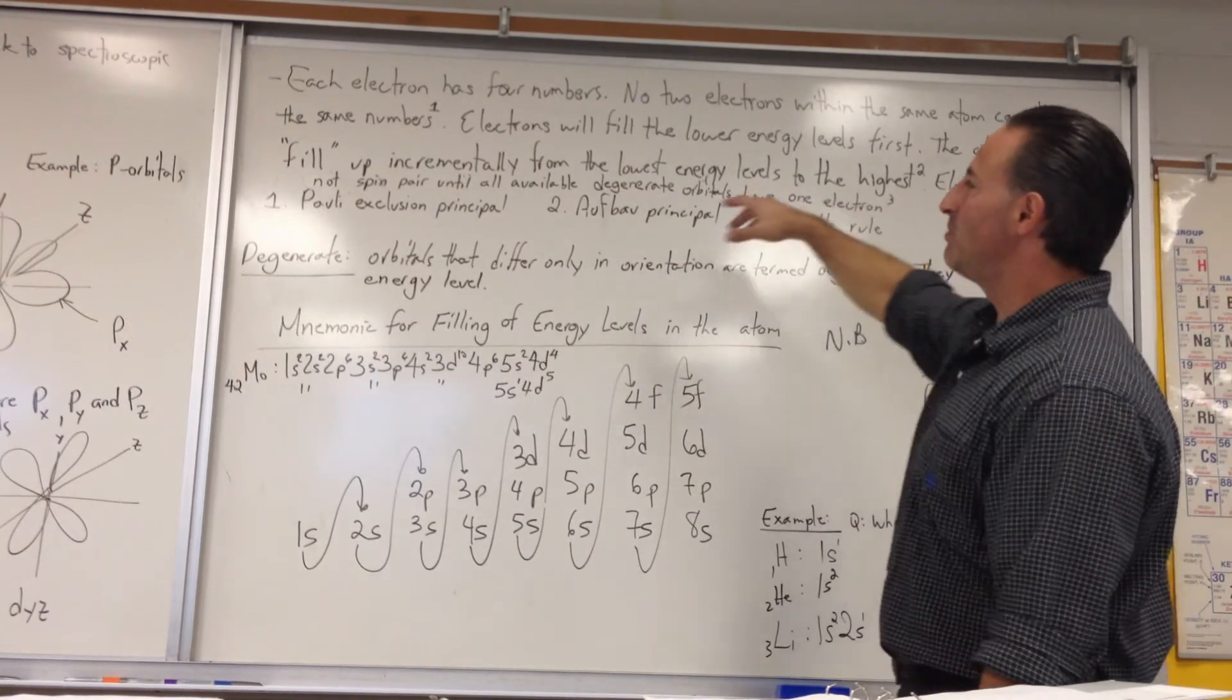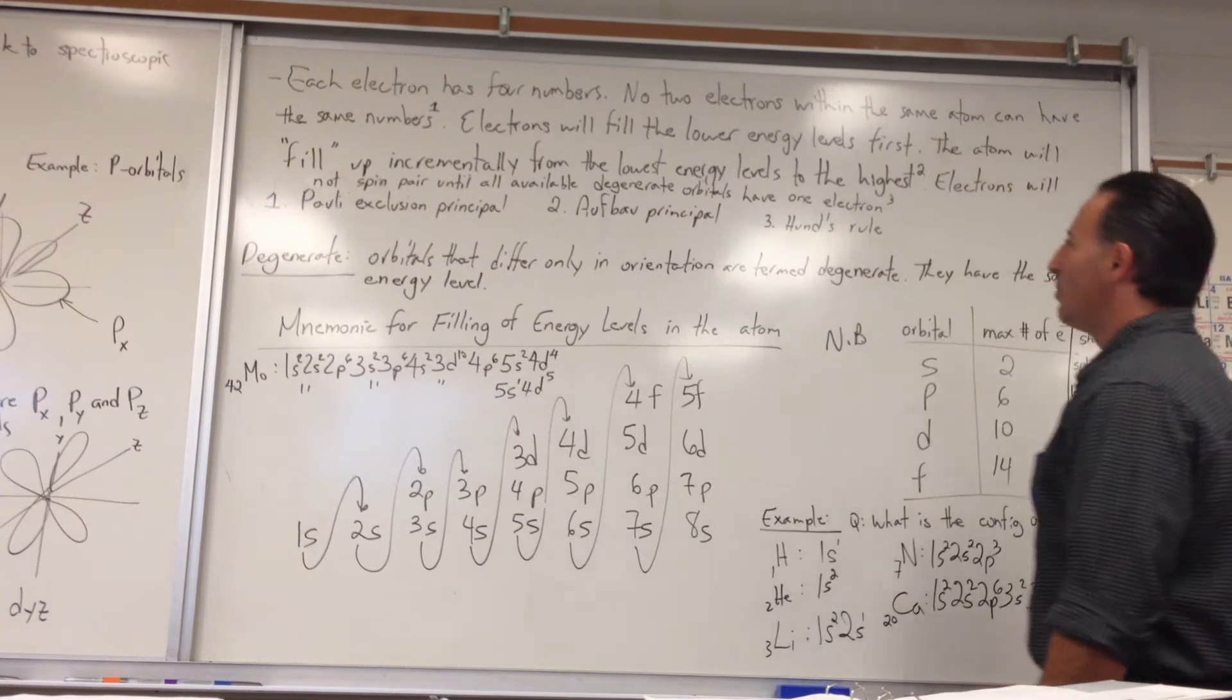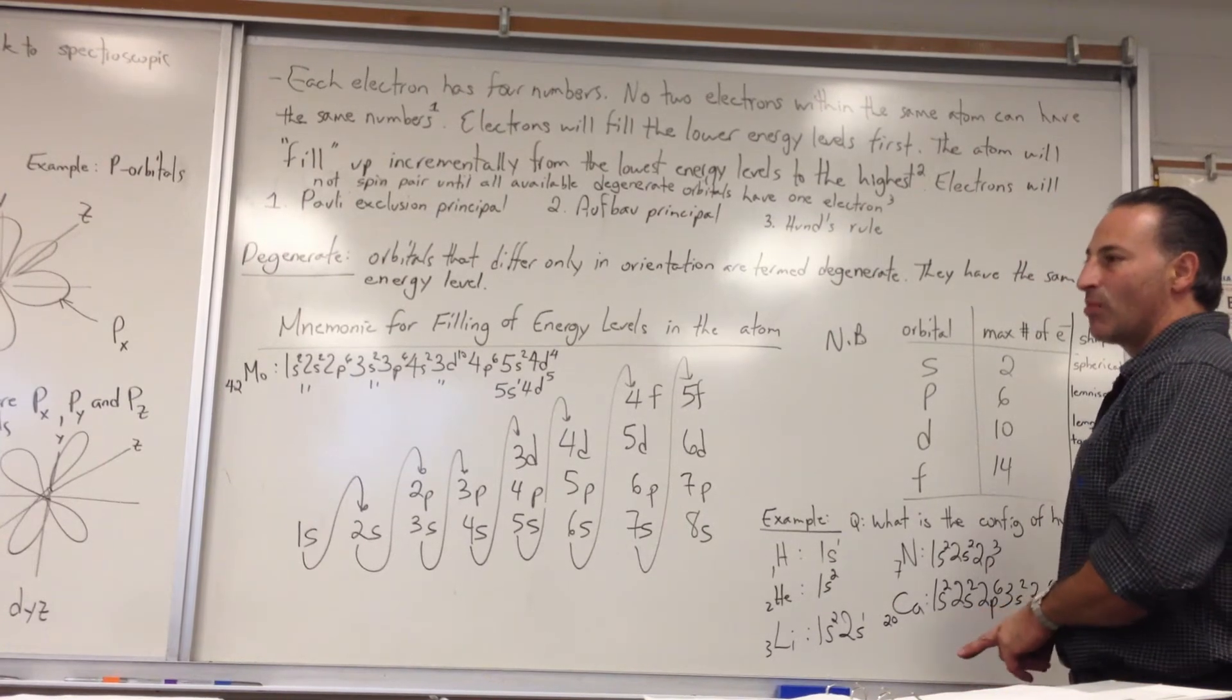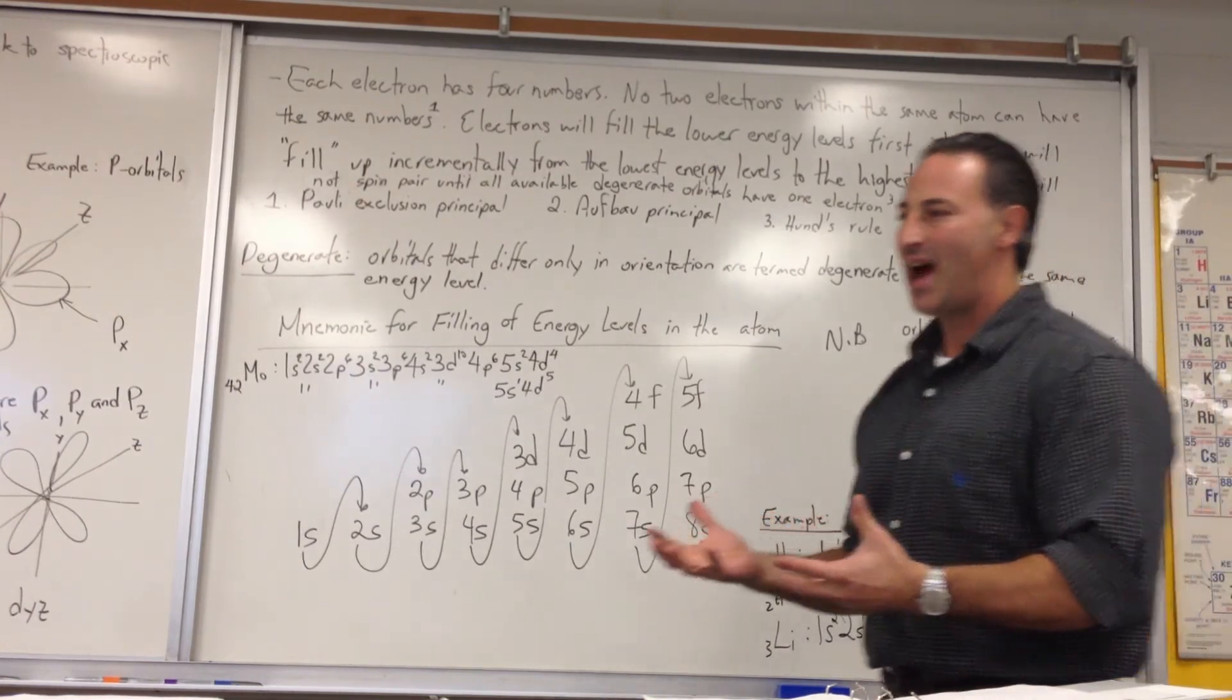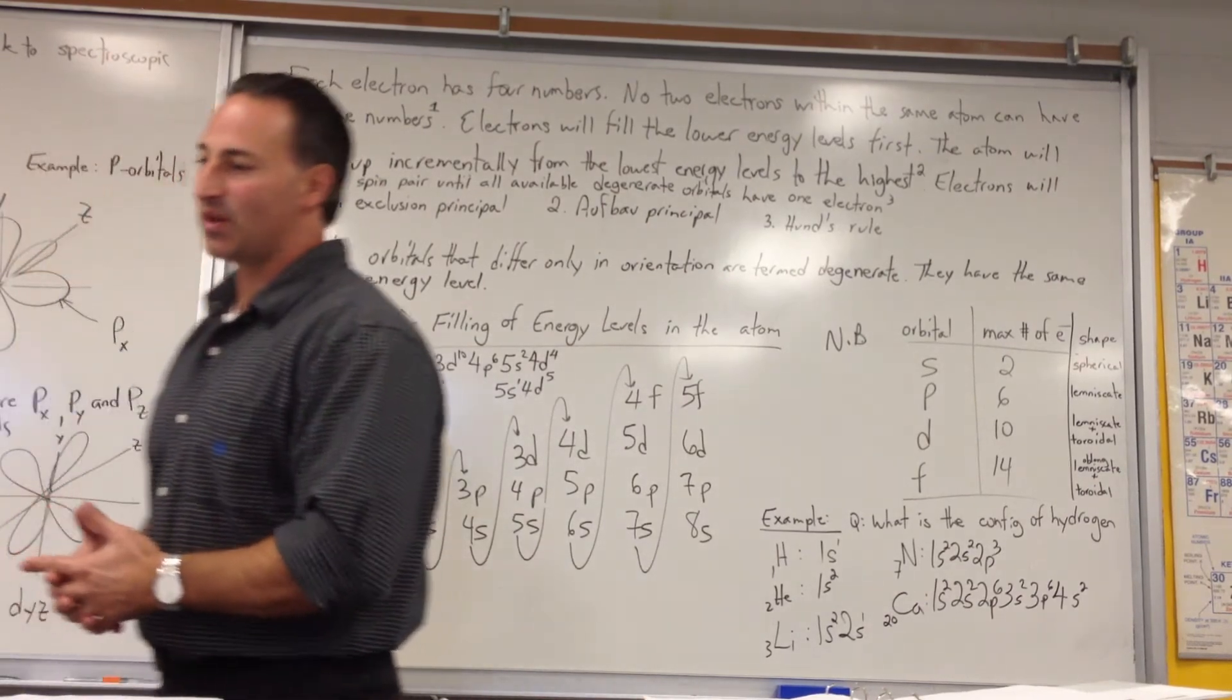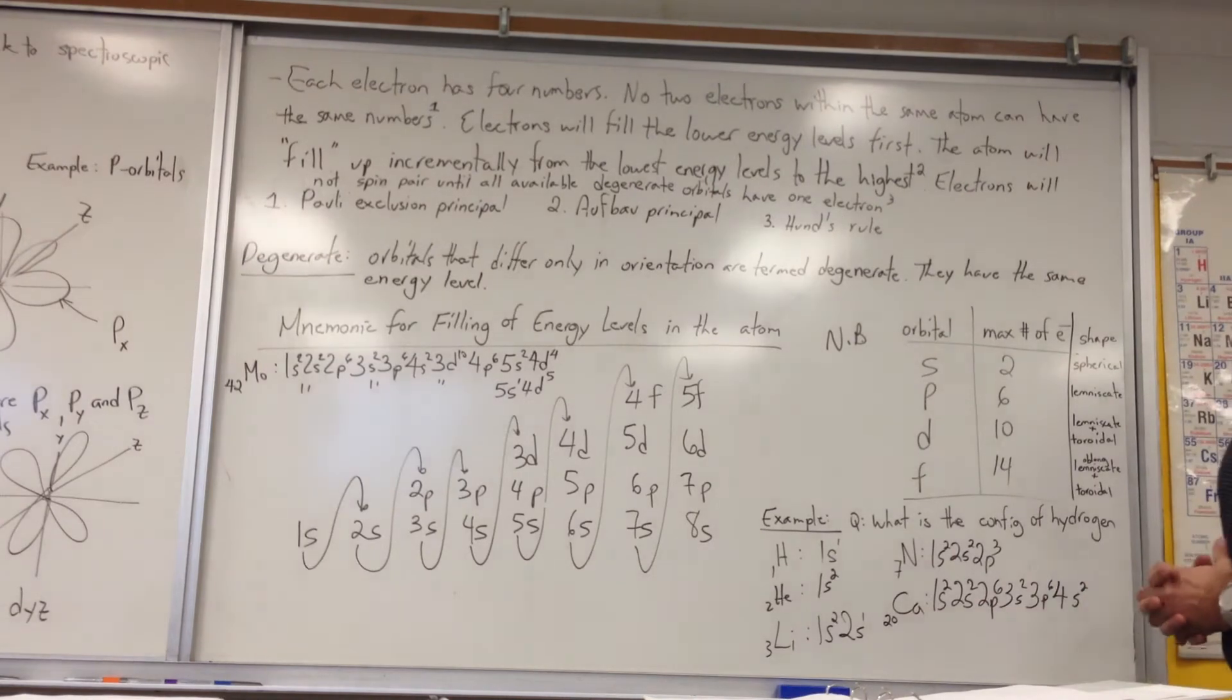Electrons will not spin pair until all available degenerate orbitals have one electron, which is a fancy way of saying they won't stay in the same orbital unless there's no other place to go. If the bus is half filled, then you have no place to go except to sit next to somebody else.